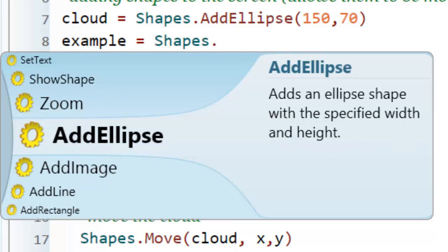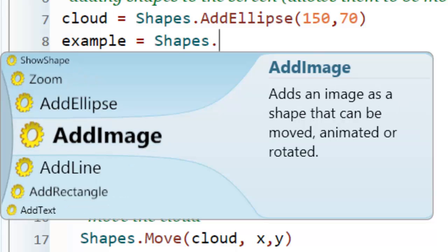I use an ellipse because it's the right size for a cloud, but if I wanted to, I could use an image.